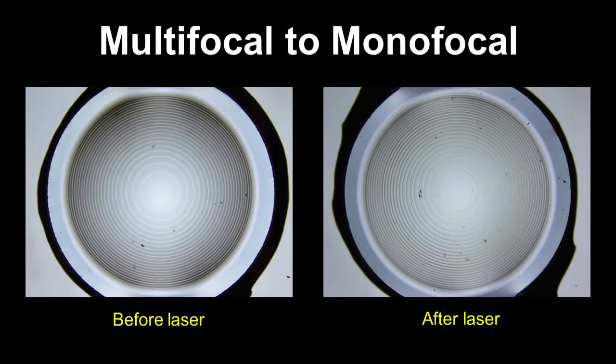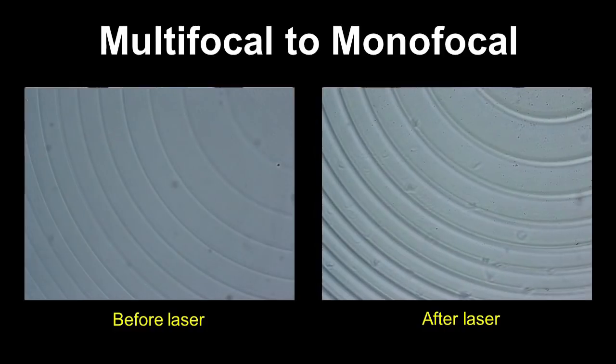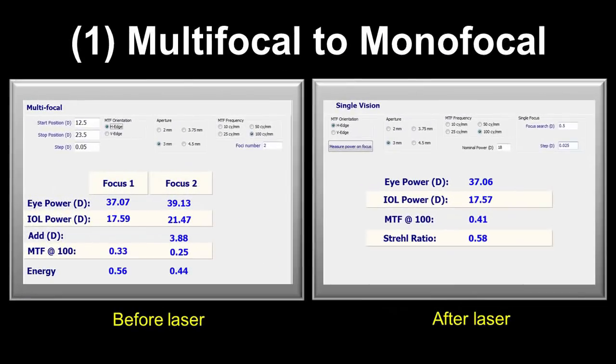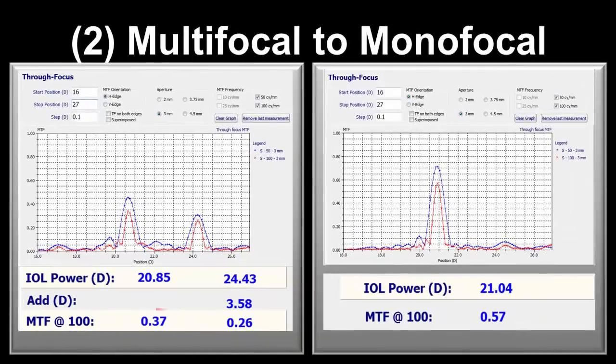This commercially available multifocal lens was changed to a monofocal lens. There were subtle changes to the optics seen under light microscopy following the laser treatment. The multifocal lens had two foci with a modulation transfer function or MTF for far vision of 0.33. After laser treatment, the near focus disappeared and the MTF for far vision improved to 0.41. Optimization of laser parameters can further enhance the increase in the far MTF.